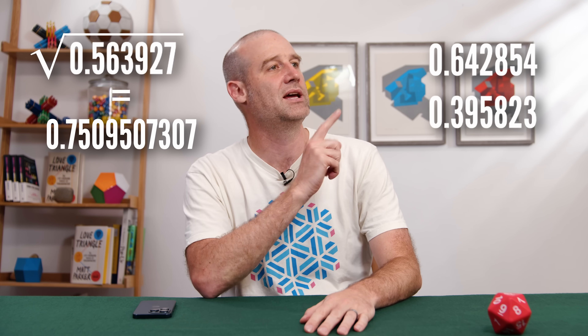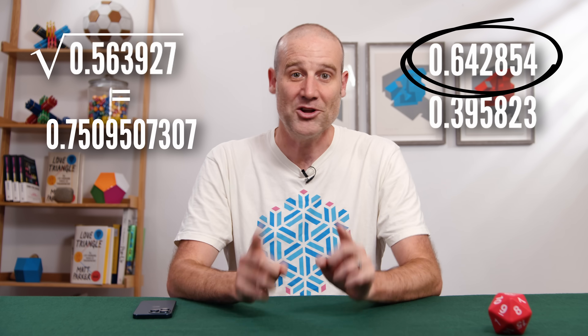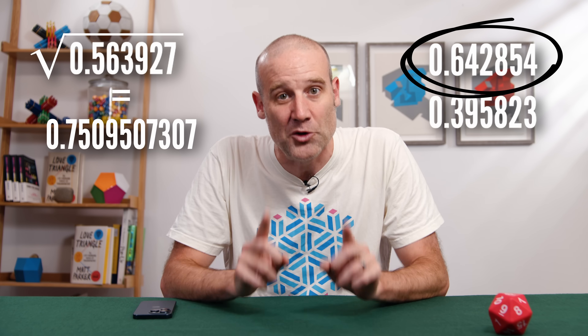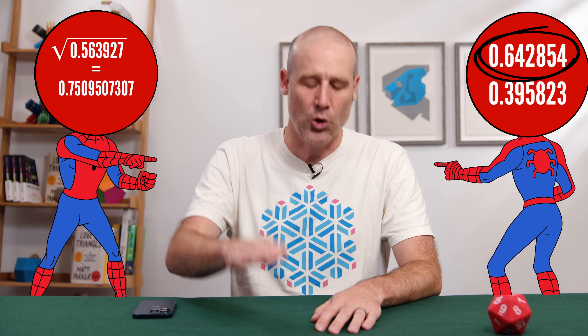And once we've got one of these random numbers, we can do something with it. For example, you could take a random number and calculate its square root. Or you could take two random numbers and calculate which one's bigger. And it turns out those two operations are mathematically equivalent.